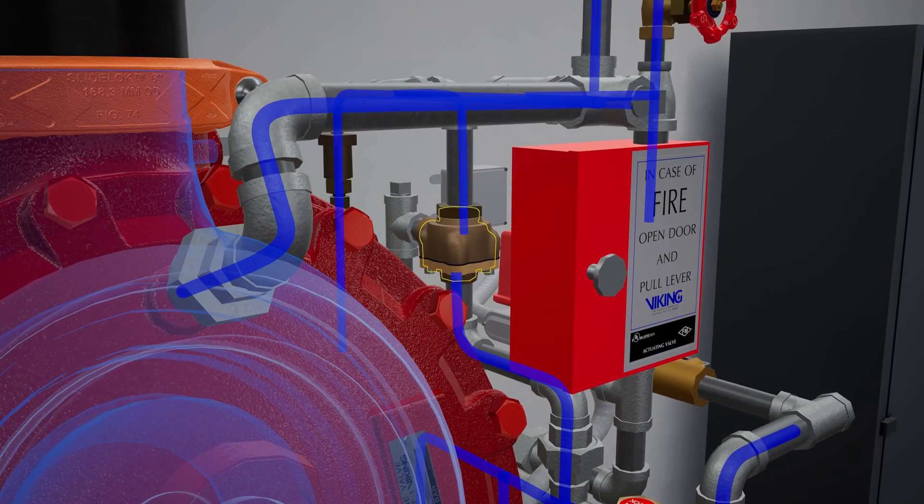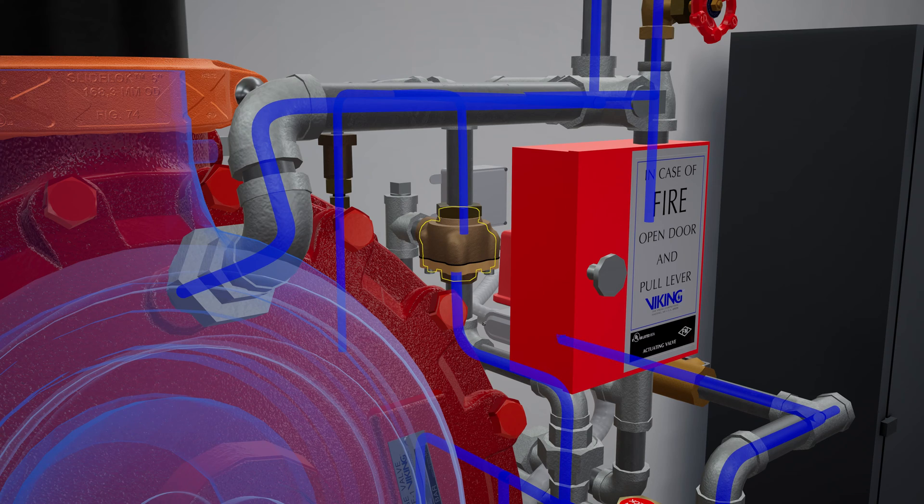The PORV is activated when water from the main supply forces the pushrod open, redirecting prime water out into the drain cup.